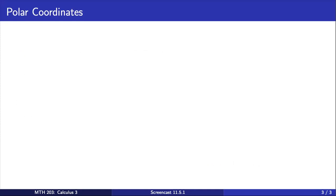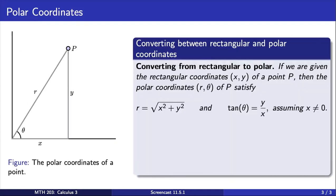To convert from rectangular to polar coordinates, we use the Pythagorean theorem and trigonometry. First, we see that using the Pythagorean theorem, the value of r is the length of the hypotenuse of the right triangle formed here. So r is going to equal the square root of x² plus y².